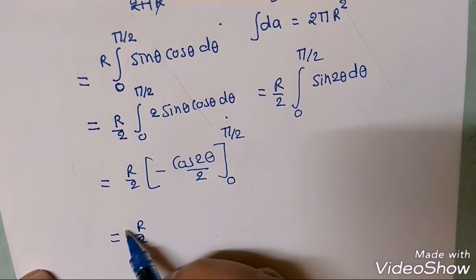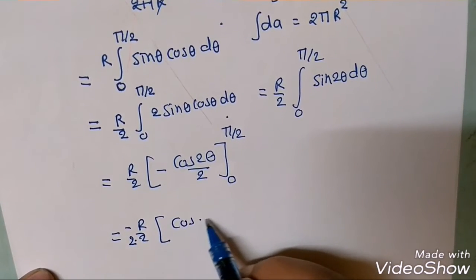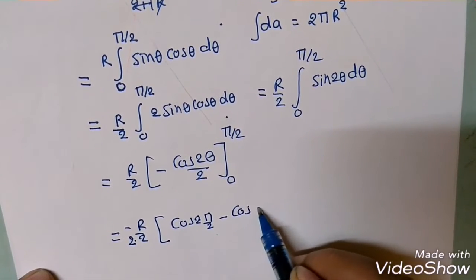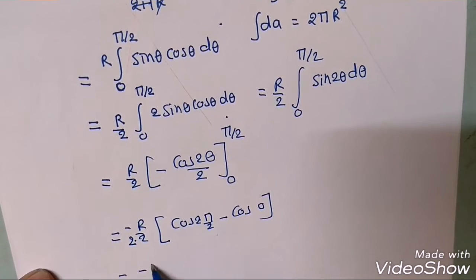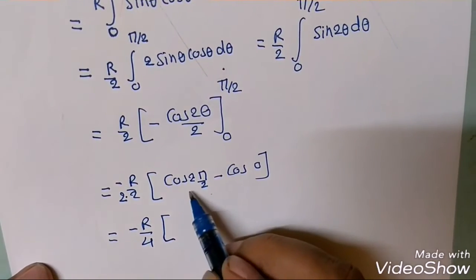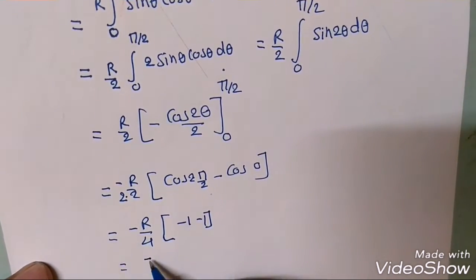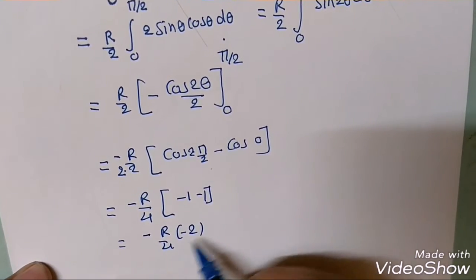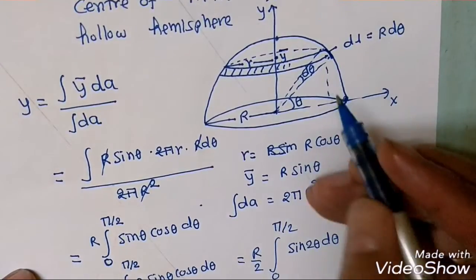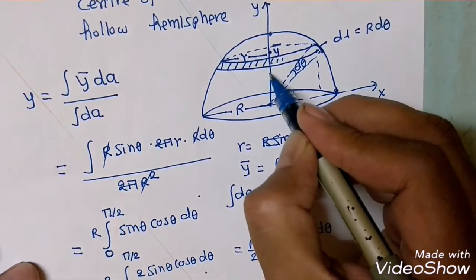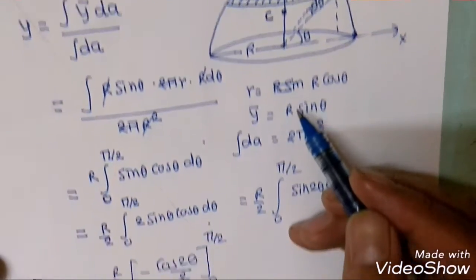R divided by 2, sin outside. This is 2 outside cos theta, meaning cos 2 pi by 2, 1 minus cos 0. So minus r by 4, cos 2 cancels, pi minus 1 minus 1. We get minus r by 4 into minus 2, so we get r by 2. Therefore y-bar is equal to R by 2 for the hemisphere.